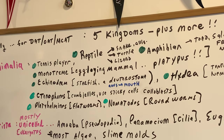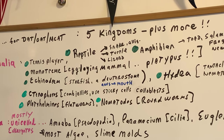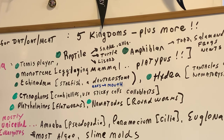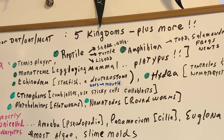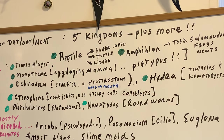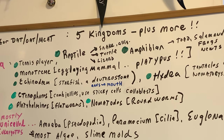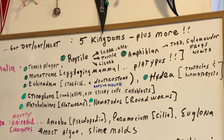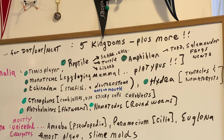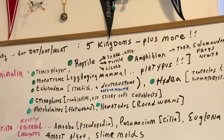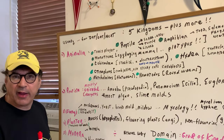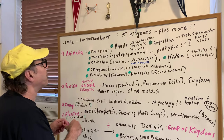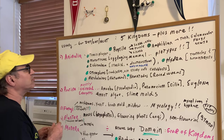Echinoderms — if you remember, the echinoderms would be like the starfish, which is a great example. These are deuterostomes. Deuterostome means the anus forms first, then the mouth. So the first opening to form is the anus, then the mouth, in contrast to protostomes. Don't forget chordates — vertebrates — as well as echinoderms. These are all deuterostomes.